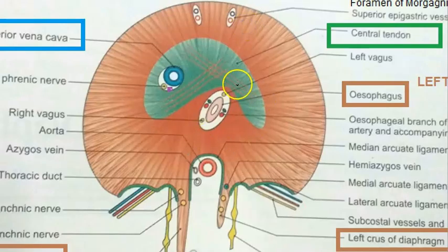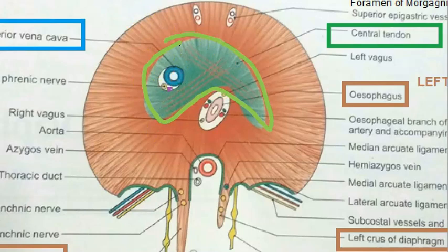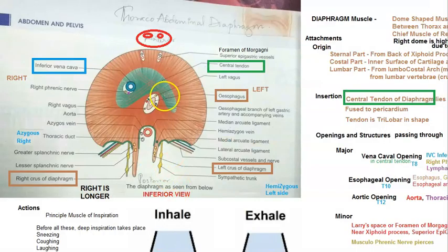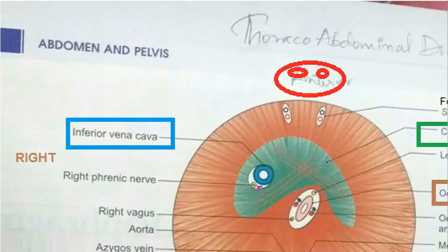Looking at the diaphragm, the central tendon is shown in green, and hernia can occur through it. The foramina include the foramen of Morgagni and the foramen of Bochdalek. Many structures pass through the diaphragm — the inferior vena cava, phrenic nerve, esophagus, and aorta — creating multiple potential sites for herniation.